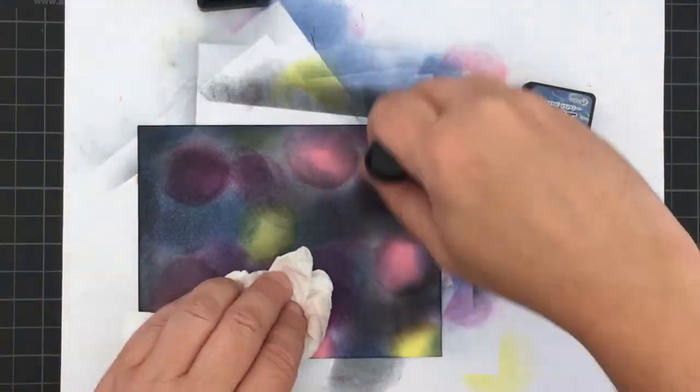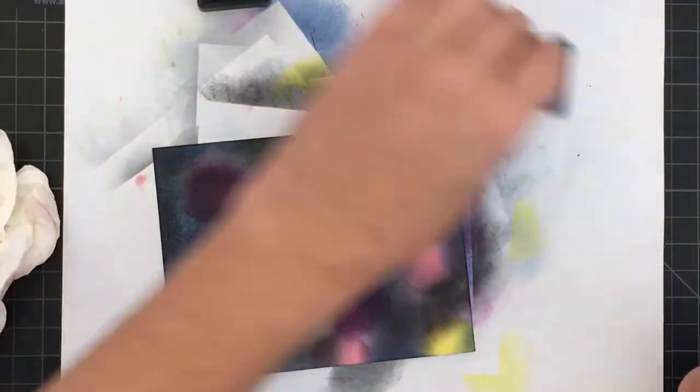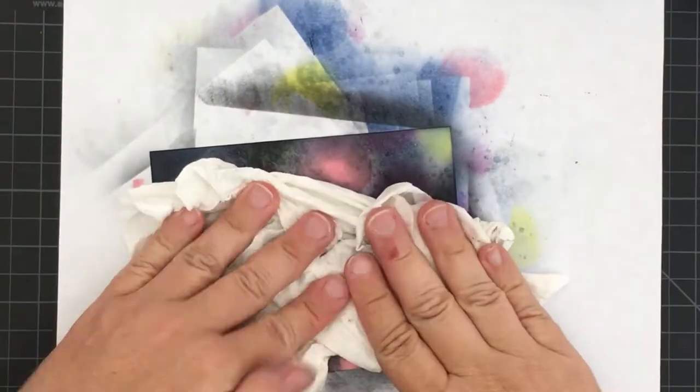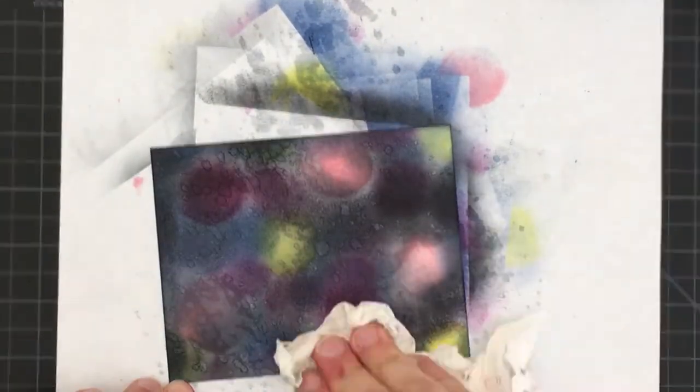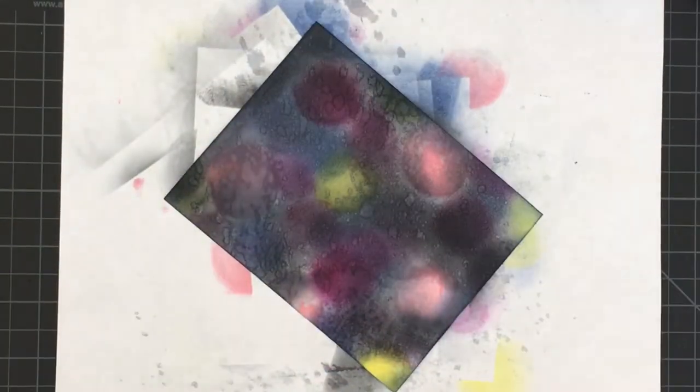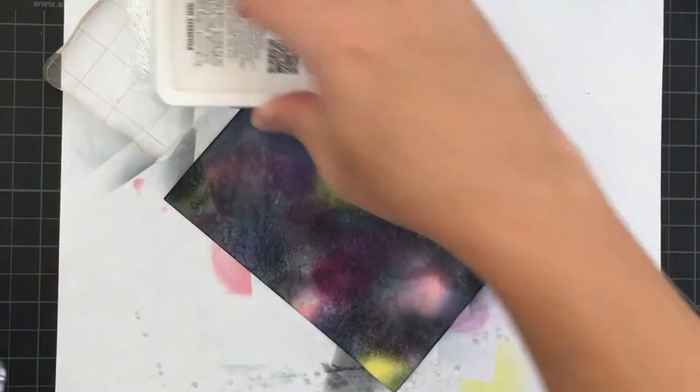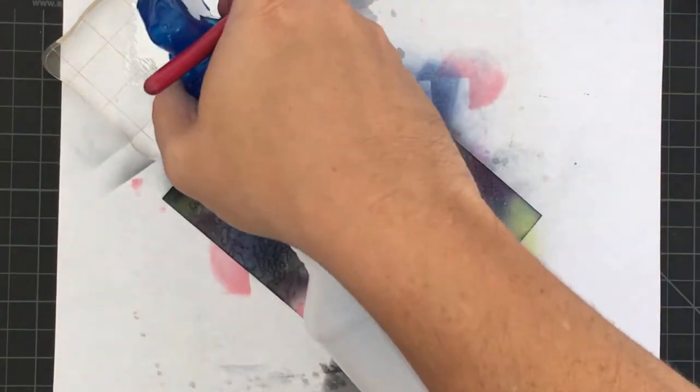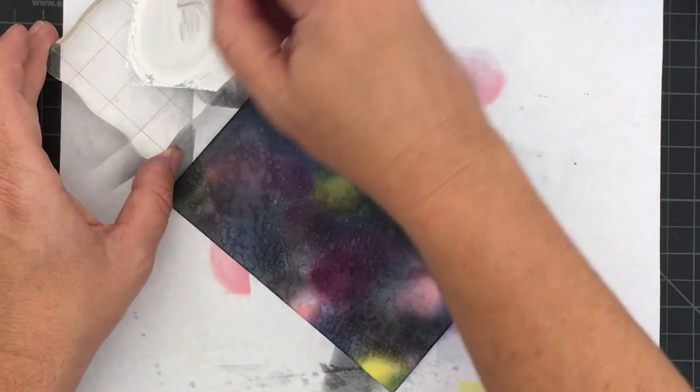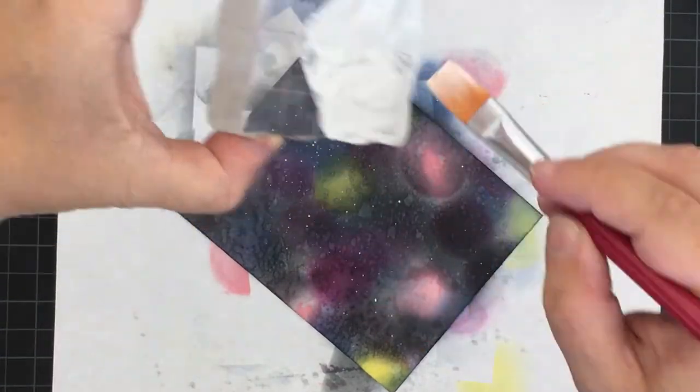Once I have that looking pretty much the way I want it, I'm going to take some water and mist the spray bottle on that and then blot that off. Because it's Distress Oxide ink, it will react to the ink.